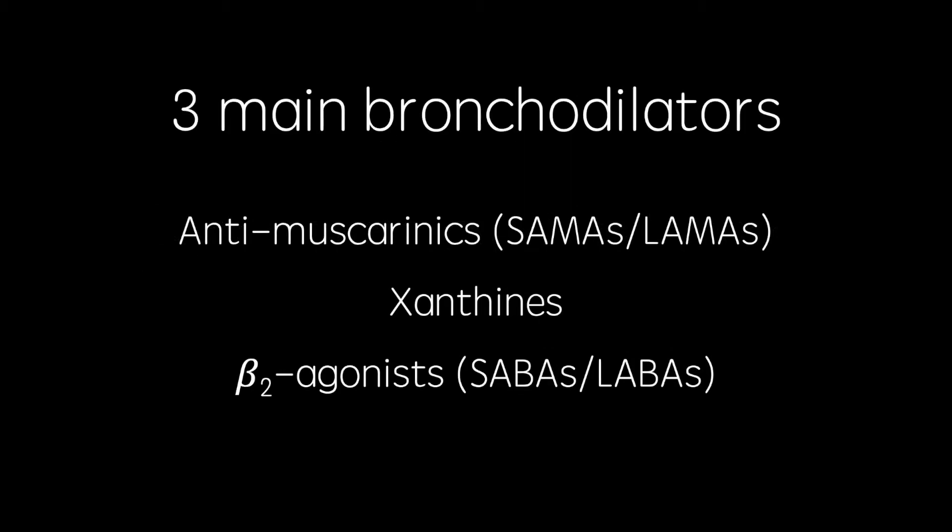In this video, I'm going to give a brief overview of the mechanisms of action of various bronchodilators used to treat both asthma and COPD. The three main bronchodilators are antimuscarinics, xanthines, and beta-2 agonists. All three of these classes of drug dilate the airways by increasing protein kinase A activity.